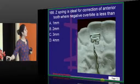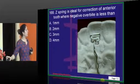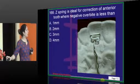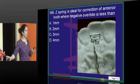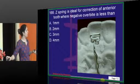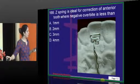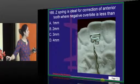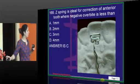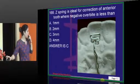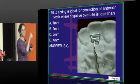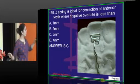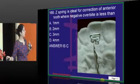A Z-spring is ideal for correction of an anterior tooth when the negative overbite — that means a crossbite — is around 2 to 3 mm. Less than 1 mm cannot be corrected, 4 mm is also not possible, and 1 to 2 mm is too less. So the ideal range is 2 to 3 mm.